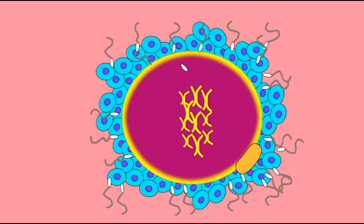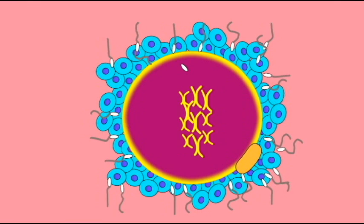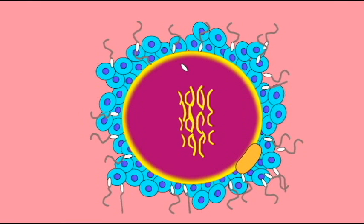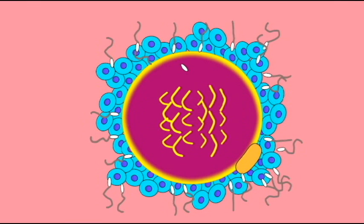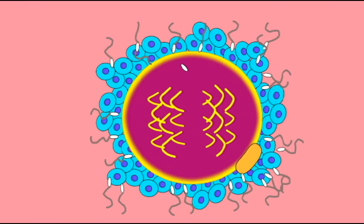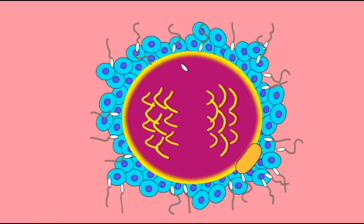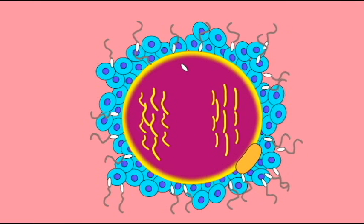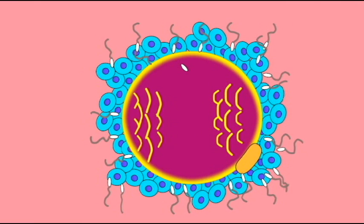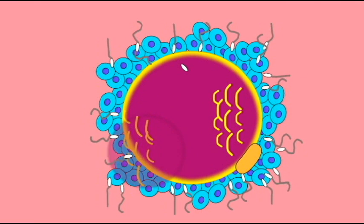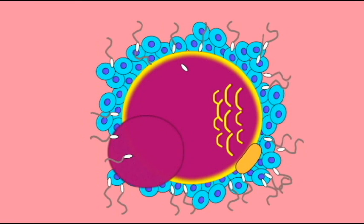First, the cell membrane depolarizes once the first sperm has penetrated. Second, the influx of calcium ions causes the exocytosis of vesicles.